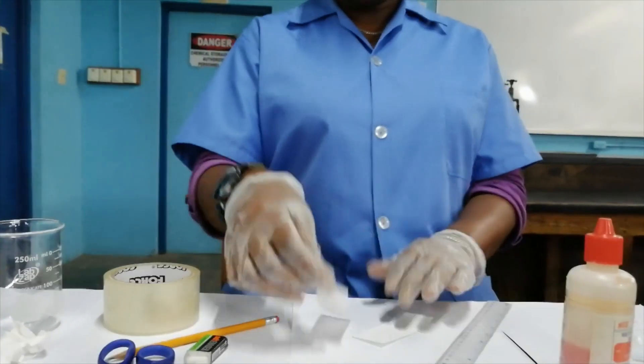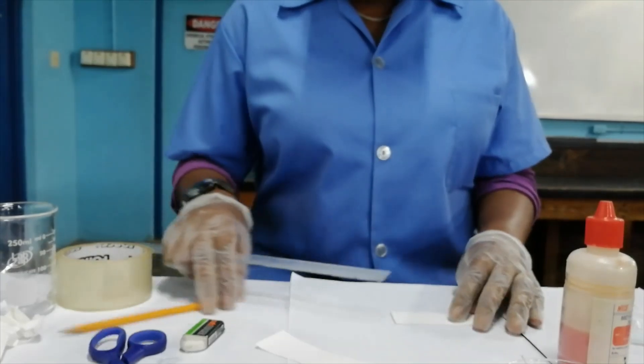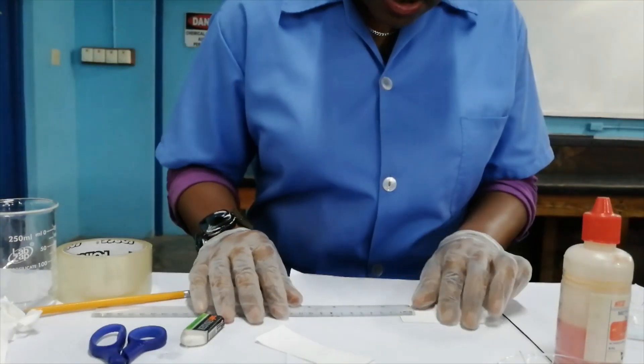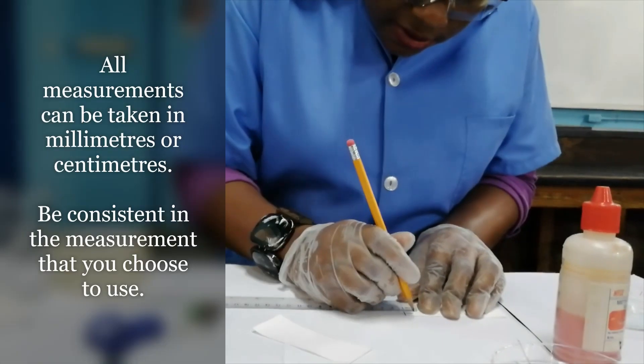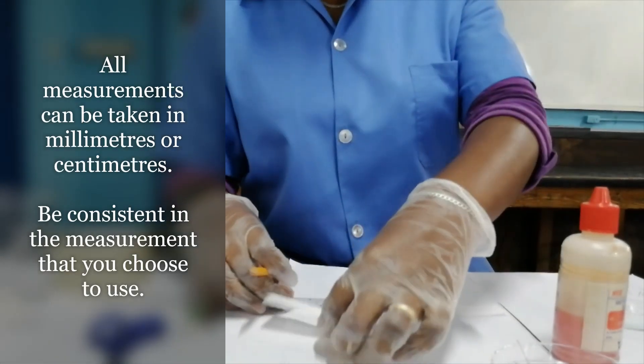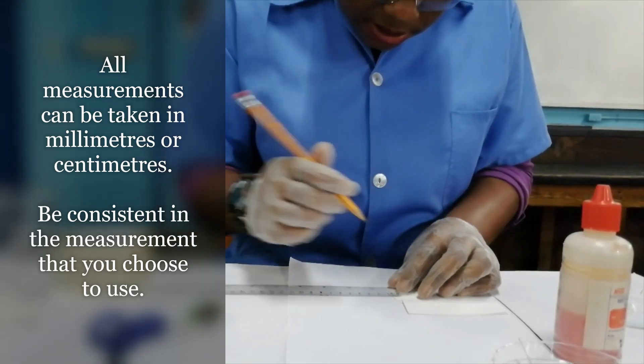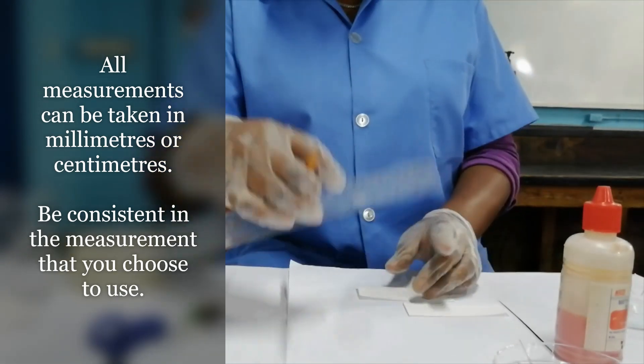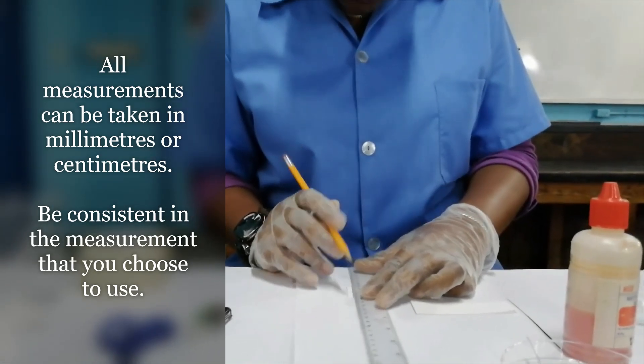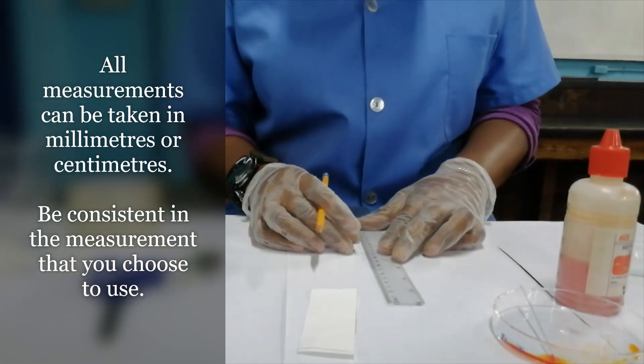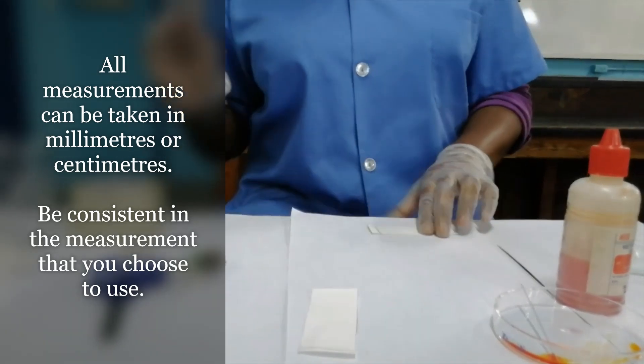When we're doing this technique, the spots of the sample need to be placed on the line of origin because you'll have to do a calculation. The line of origin is the baseline and it can be one centimeter from the long edge or 0.5 centimeters. I'm going to do one that is one centimeter and one that is 0.5 centimeters from the long edge.